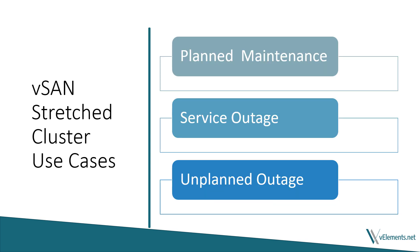The first use case is to plan maintenance in one site without any downtime. Or in case of service outage — for example, if a power supply fails — by using vMotion, VMs could migrate to the other site before the applications are affected. And lastly, if there is an unplanned outage, virtual machines will start on the secondary site with the help of vSphere HA. The recovery time objective, or RTO, is very low, so you don't need a complex orchestration process to recover VMs.